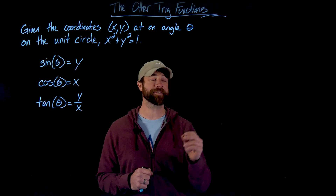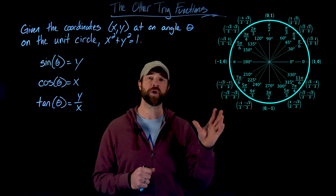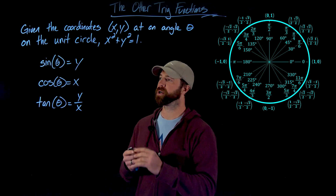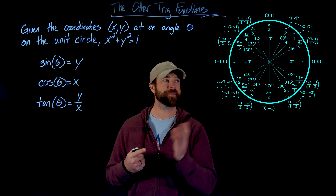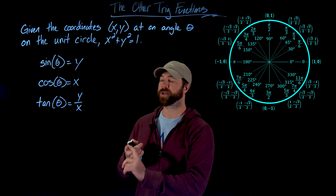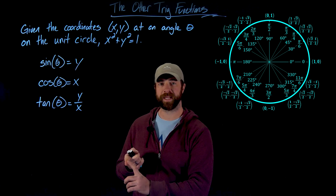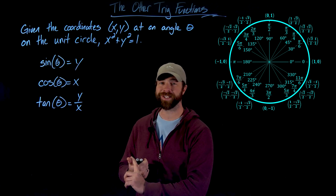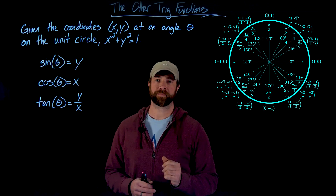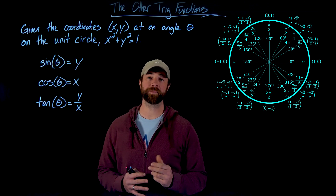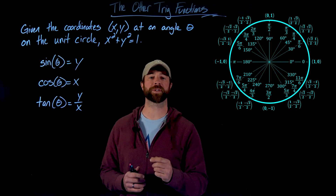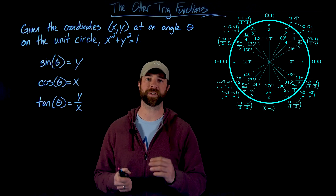Specifically, given our unit circle here, we've defined these three trigonometric functions where the sine of any angle is the y value, the cosine of any angle is the x value, and the tangent is the y value divided by the x value. The next thing we want to do is define the three other trig functions based on this unit circle definition.